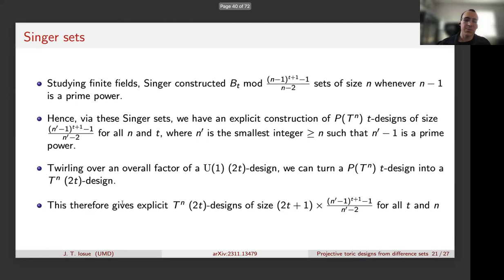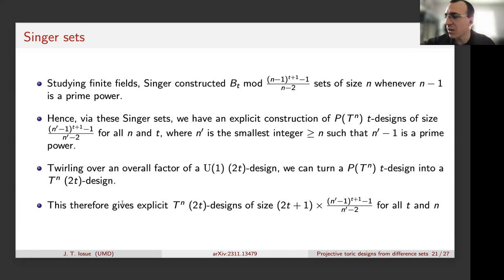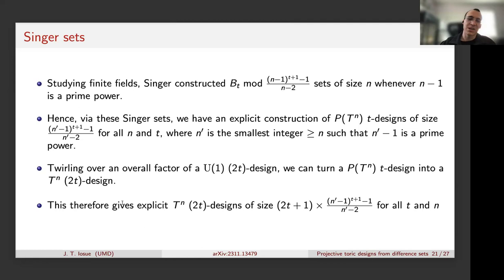Singer sets come from studying finite projective geometry, and complete sets of MUBs are also conjectured to be related to finite projective geometry or finite affine geometry. That's probably the reason Singer sets appear here — there's likely a global overarching reason why Singer sets, finite projective geometry, MUBs, projective toric designs, and these difference sets are all related. I'd like to see someone explain all of it in one go.